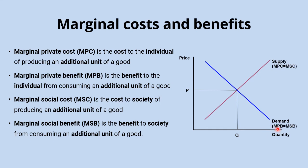Now, if there are no externalities and so there's no market failure, there are no external costs or benefits. Those private costs and private benefits are going to be the same as the social costs and social benefits. That's why I've labelled the supply curve MPC equals MSC, because if there are no externalities, they will be the same. And if there are no externalities, the marginal private benefit will equal the marginal social benefit. In that case, the market equilibrium where supply equals demand will provide an efficient allocation of resources, because allocative efficiency is achieved where the marginal social cost of production equals the marginal social benefit of consumption.